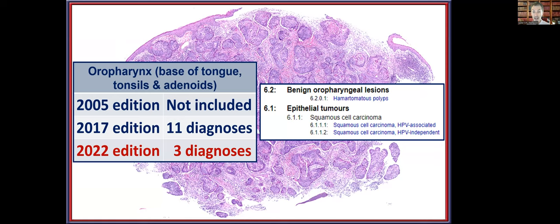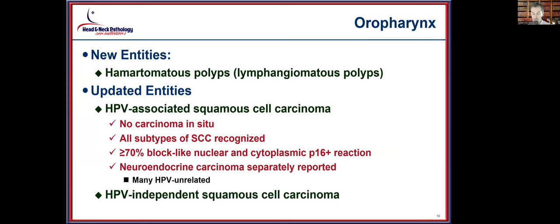In the oropharynx, the 2005 edition included nothing at all — it was still part of the oral cavity. The 2017 fourth edition gave 11 diagnoses, separating it from the oral cavity. Now we're down to just three diagnoses: hamartomatous or lymphangiomatous polyps as benign reactive lesions, and updated entities of HPV-associated squamous cell carcinoma versus HPV-independent squamous cell carcinoma. The term 'HPV-unrelated' sounded awkward, so HPV-independent is now the classification used.